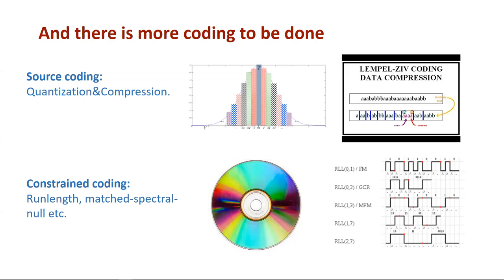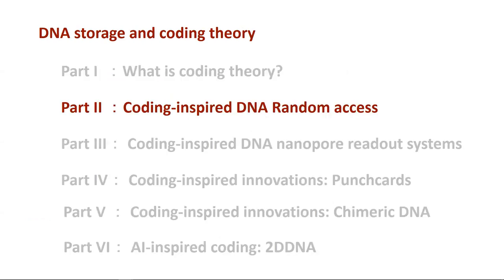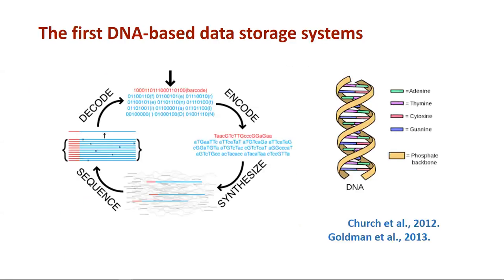That area of coding theory is also something Shannon came up with and it's called constraint coding. So there are many different types of codes, and I will try to touch upon all of them in the context of DNA storage. When did DNA storage come to life? Roughly 10 years ago — it's a very new field.